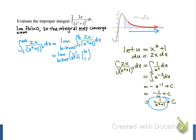When we evaluate this at b and at 1 and subtract, the result is the limit as b approaches infinity of negative 1 over b squared plus 1 minus negative 1 over 1 squared plus 1, which we can simplify to the limit as b approaches infinity of negative 1 over b squared plus 1 plus 1 half.